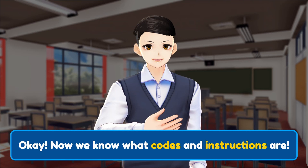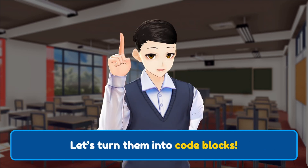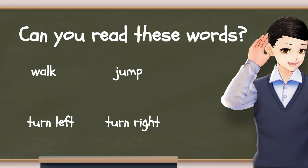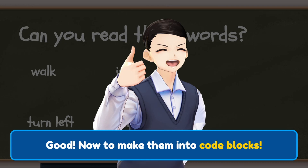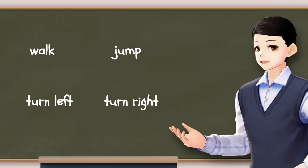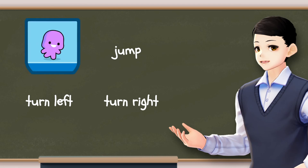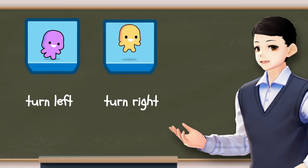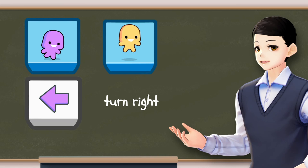Okay! Now we know what codes and instructions are. Let's turn them into code blocks. Can you read these words? Good! Now to make them into code blocks: Walk becomes... Jump becomes... Turn left becomes... And turn right becomes...